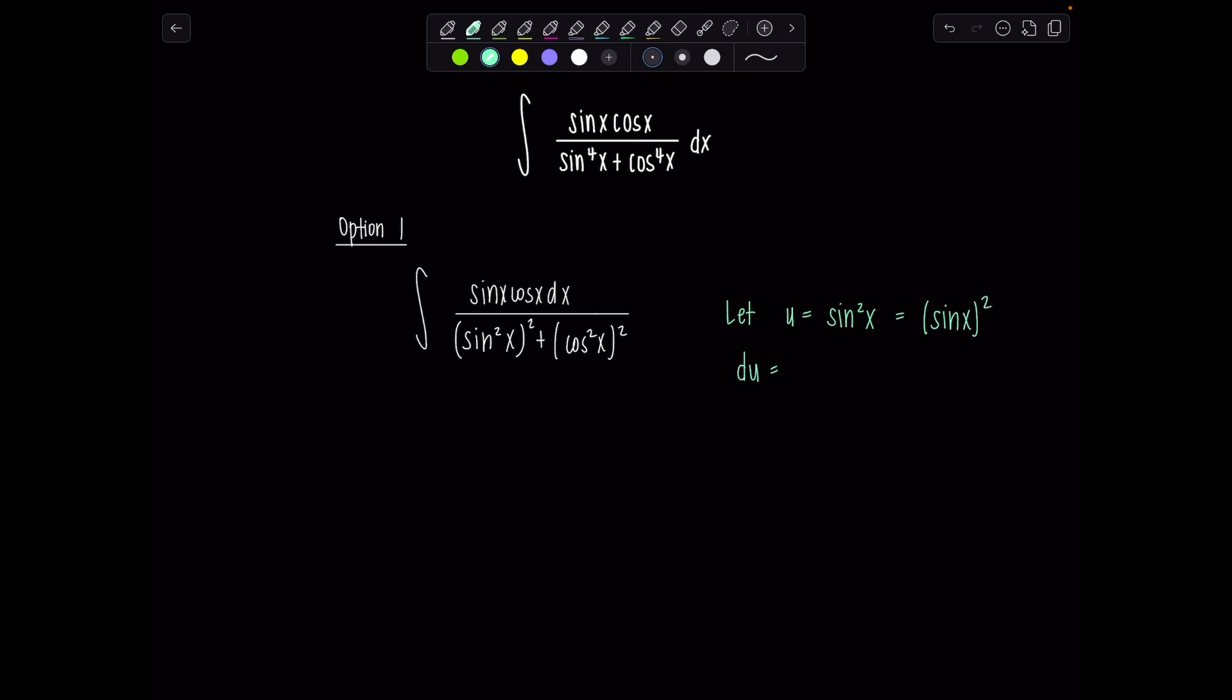When you find du, you need to apply the chain rule. So bring the two down front. That's 2 sine x times derivative of sine x, which is cosine x dx. Do you see how beautifully this is going to play out? There's sine x cosine x dx right there. So that means one-half du is sine x cosine x dx. Fabulous.